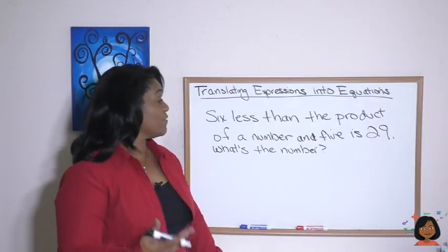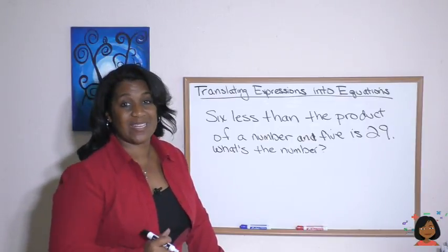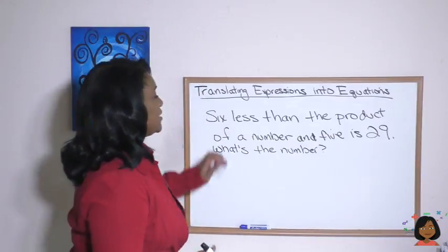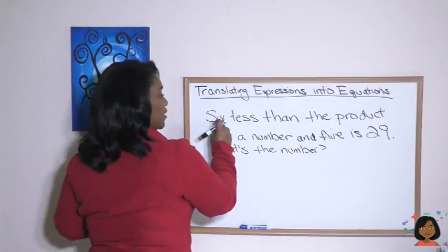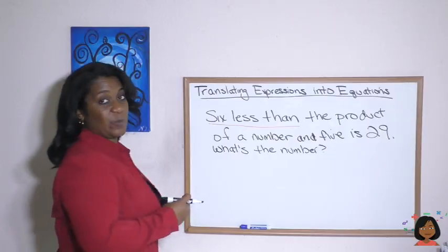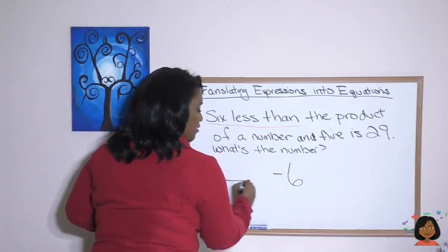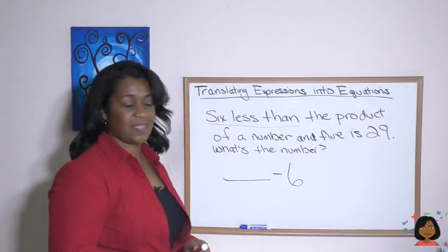Six less than the product of a number and five is 29. What's the number? Let's do some translations. Six less than means that we're going to be subtracting six from something. So let's just go ahead. There's our something and there's our subtracting six.